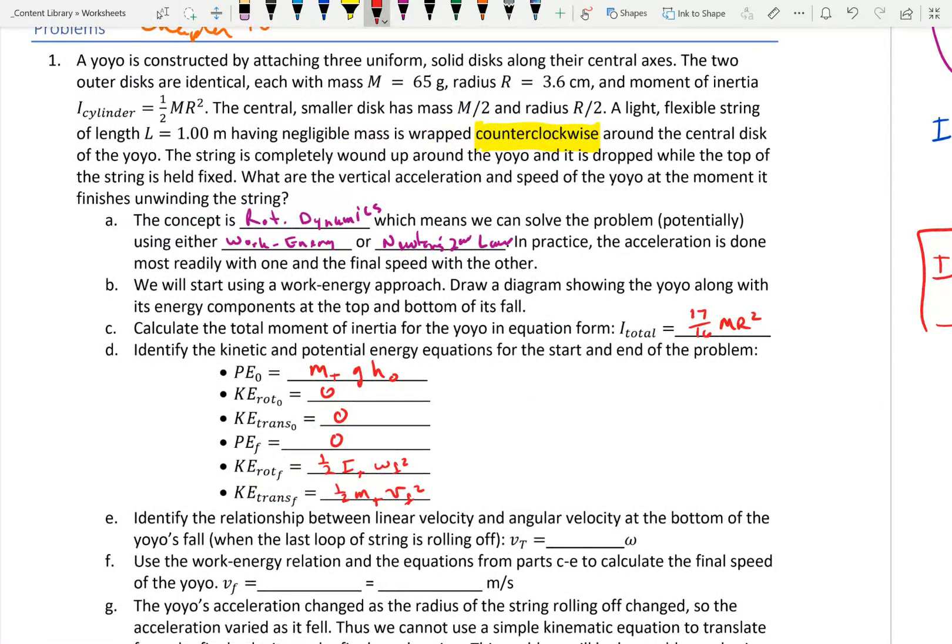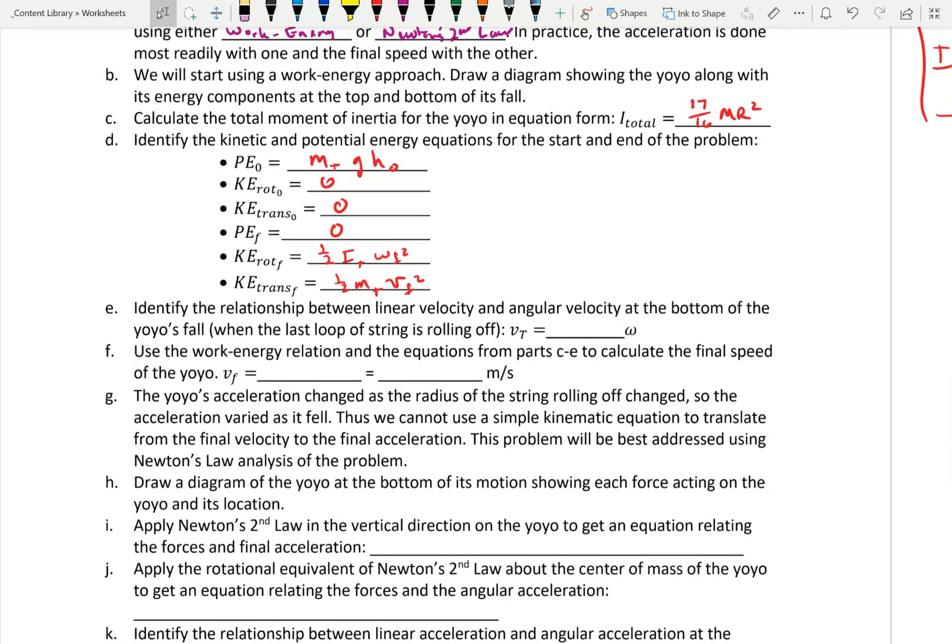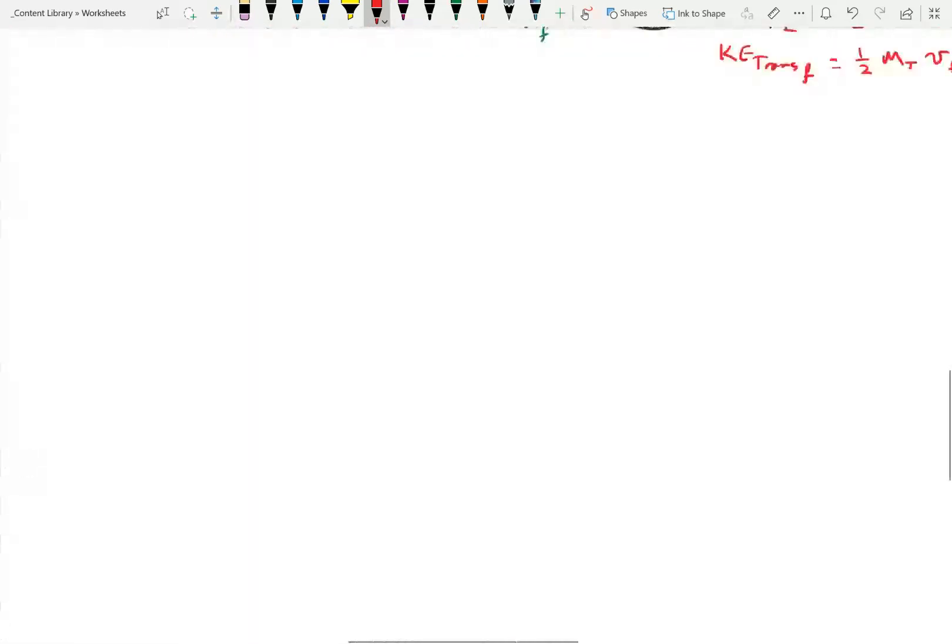So, I have all of those written out, and of course, you are supposed to write them. Calculate the total moment of inertia, 17 sixteenths MR squared. Mass total GH initial, 0, 0, 0, one half I total omega final squared, and one half M total V final squared. So, notice I have V final and omega final are both unknowns. I is known, M is known, G is known, H is known. The only thing that's unknown in this is omega and V, and we need to have a relationship between those two. Because at the end, we're on the last lap, so the radius at which it's rolling off is R over 2, then if we consider the center stationary, the tangential speed is equal to that radius of R over 2 multiplied by omega.